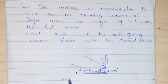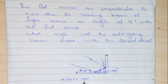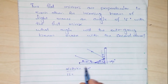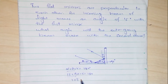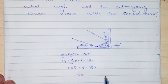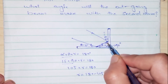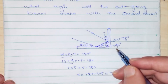We know that the sum of all the angles in a triangle is equal to 180 degrees. We have theta one equal to 15 degrees and the second angle equal to 90 degrees, so 105 plus gamma equals 180. Therefore gamma equals 180 minus 105, which is equal to 75 degrees. So theta three is equal to 75 degrees.